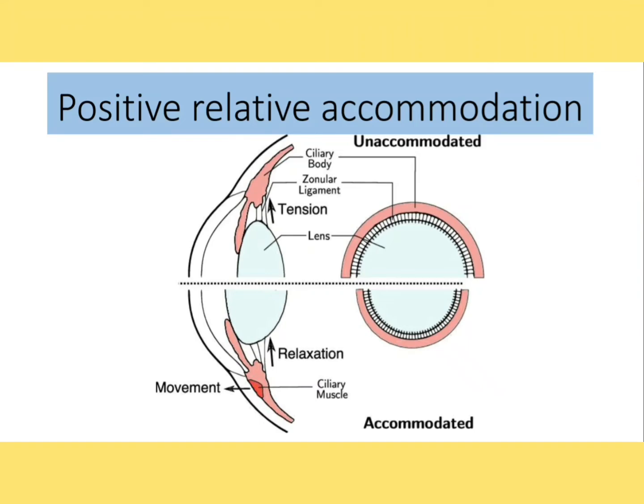This video is the continuation of our orthoptic series. The first video was on negative relative accommodation, and today I am going to discuss the positive relative accommodation test. In this test, we check how much accommodation can be exerted by the patient — the maximum amount of accommodation a patient can exert. This test is helpful to diagnose whether the patient is having accommodative excess or accommodative insufficiency.